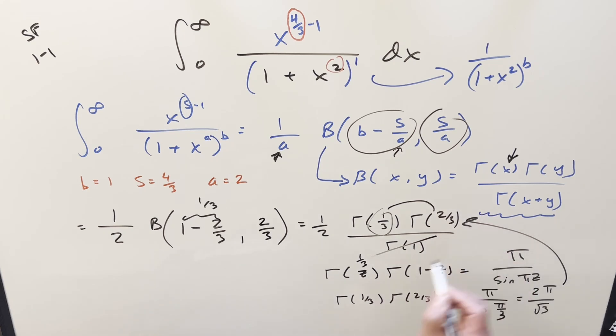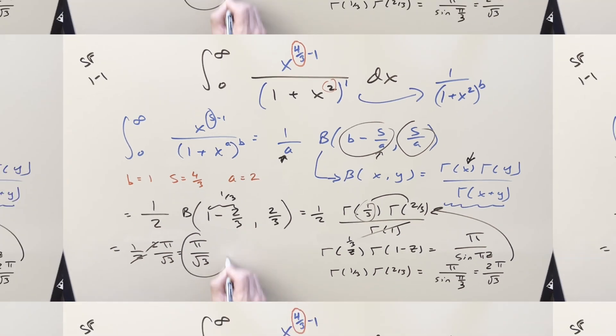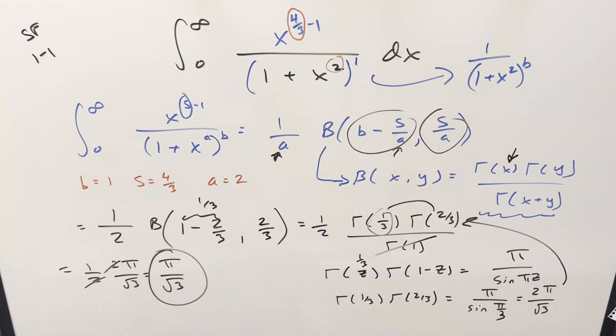Take this thing and plug it back in. What we have is one half times two pi over square root of three. So for my final solution on this, we just get pi over square root of three. And that's it. There you go. Good one from MIT 2025. Thanks everyone for watching. Have a good day.